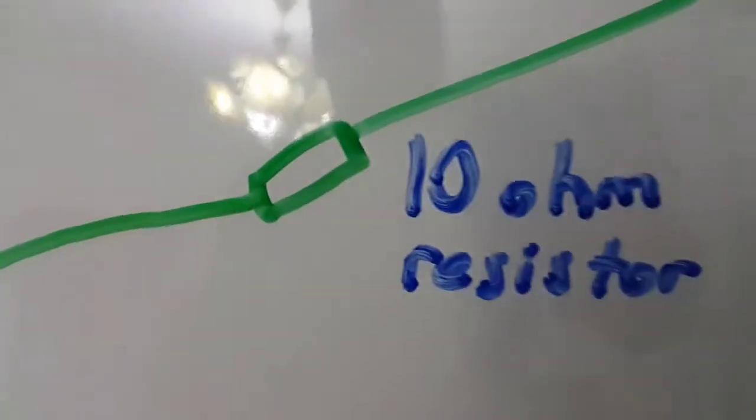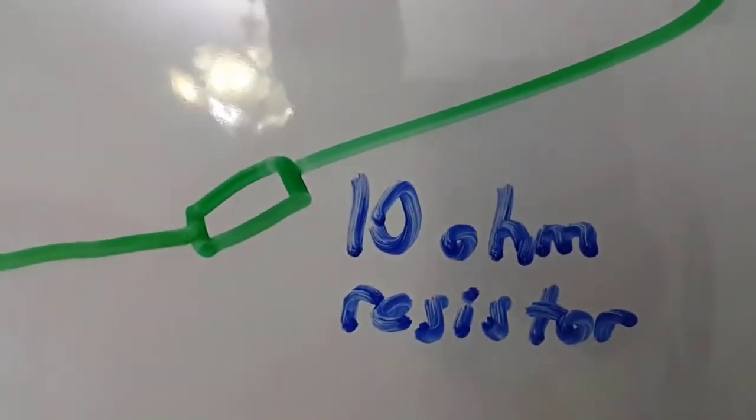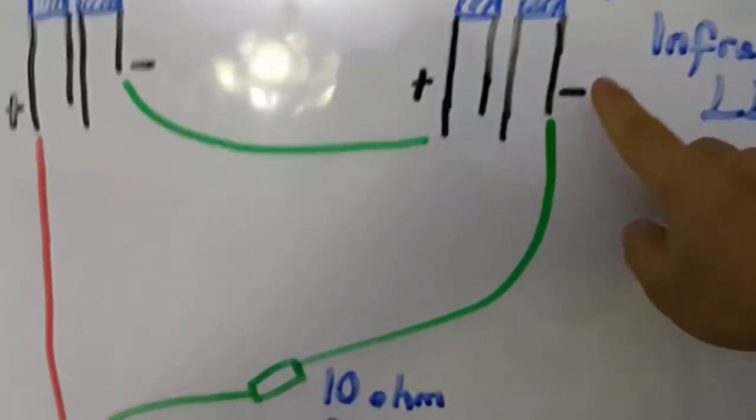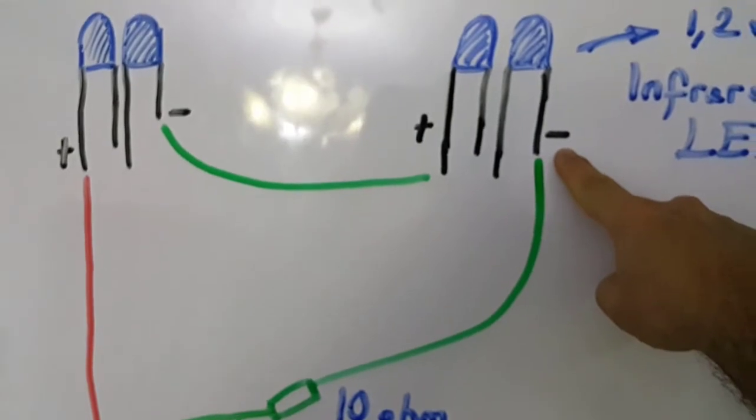You will have a 10 ohm resistor. The resistor will be connected to the minus part of the infrared.